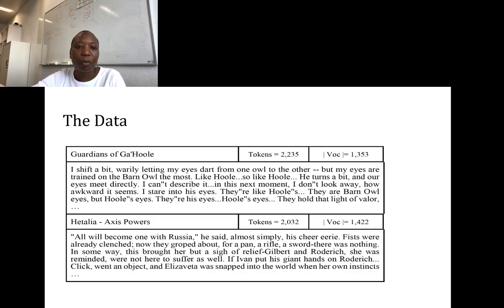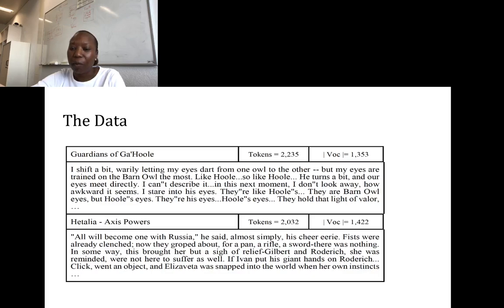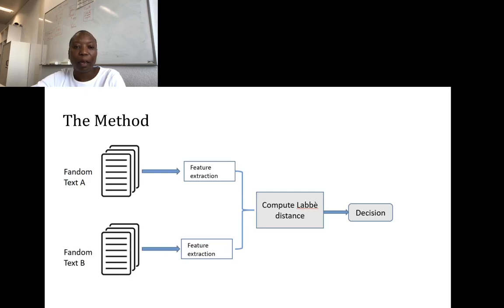An example of text written about two different topics is shown. By comparing the writing styles, we determine whether it is the same author or there are different authors. We also show the total number of tokens in each text chunk and the average number of vocabulary items used in each category.